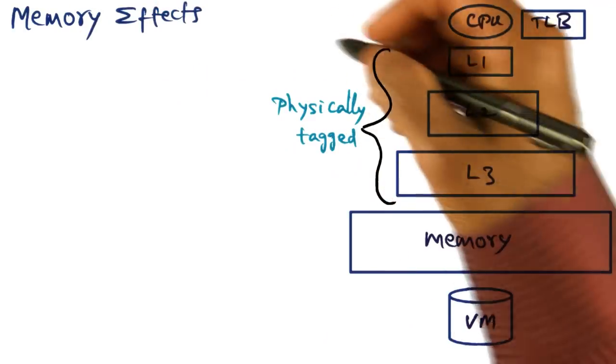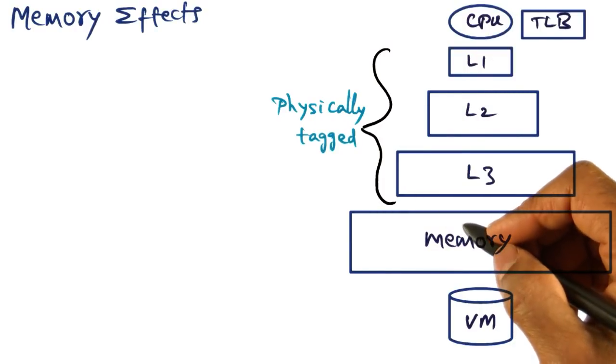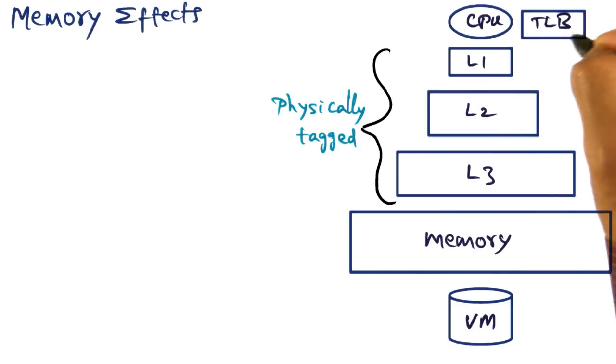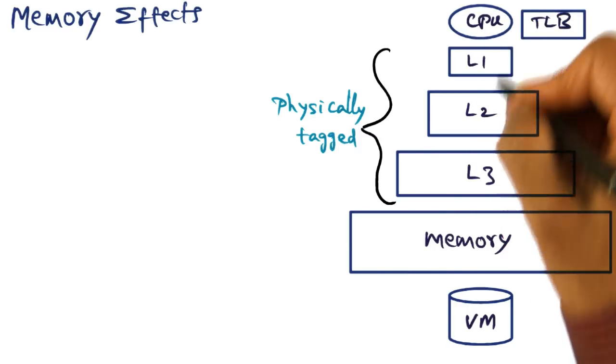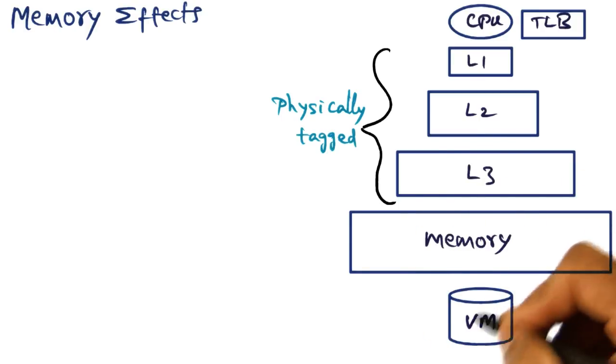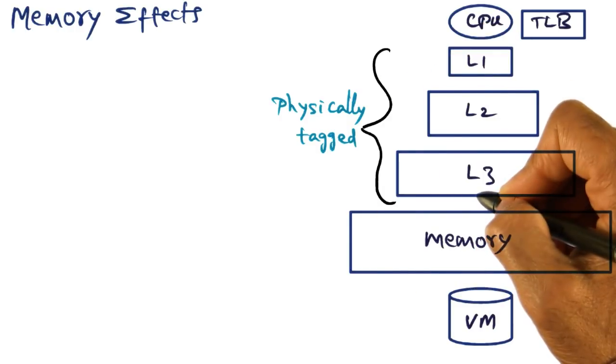But before we talk about the memory effects, there's a primer on the memory hierarchy. You know that in the processor architecture, you have the CPU, you have the TLB, and you have several levels of caches, main memory, and the virtual memory that resides on the disk. And these caches are typically physically tagged.